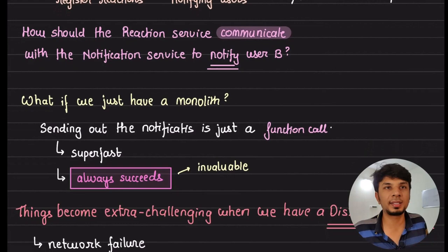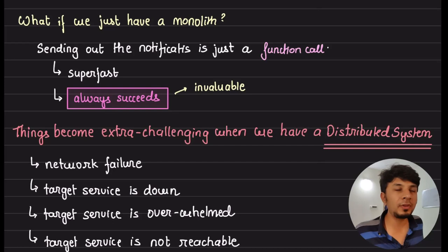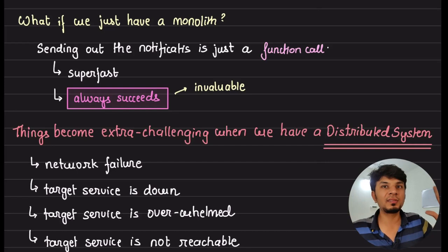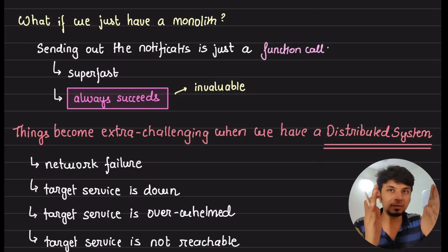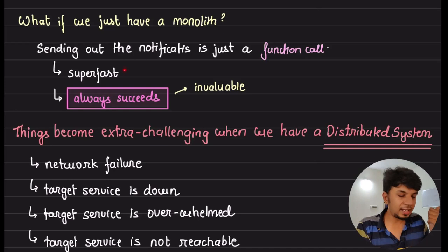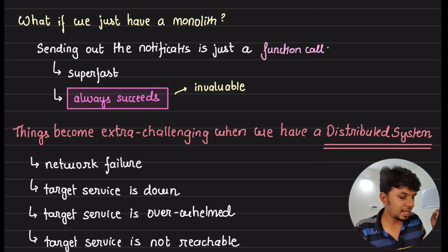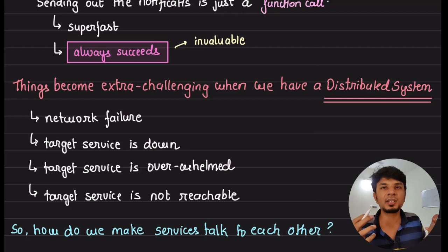Things would have been pretty simple if we had a monolith in place. A monolith means everything fits into one gigantic codebase — sending a notification is just a function call, part of the same process or thread stack. That's super fast, guaranteed to succeed, and one of the biggest advantages of monolith: there's no distributed system involved, no network call, so sending a notification via function call always succeeds.